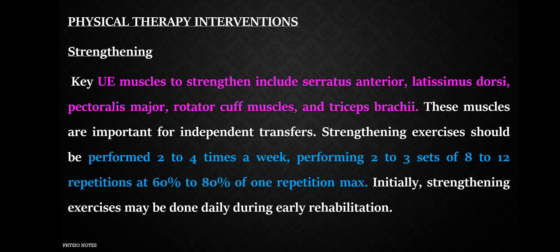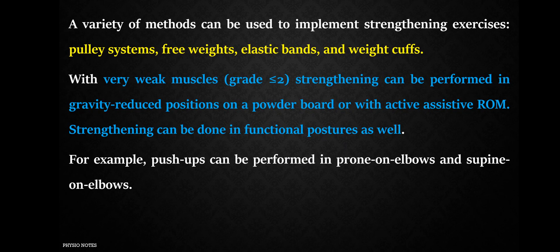For strengthening exercises, key upper extremity muscles are targeted, including serratus anterior, latissimus dorsi, pectoralis major, rotator cuff muscles, and triceps brachii, which are important for independent transfers. Strengthening is performed two to four times per week, with two to three sets of eight to twelve repetitions at 60 to 80 percent of one repetition maximum, using pulley systems, free weights, elastic bands, weight cuffs, and dumbbells.